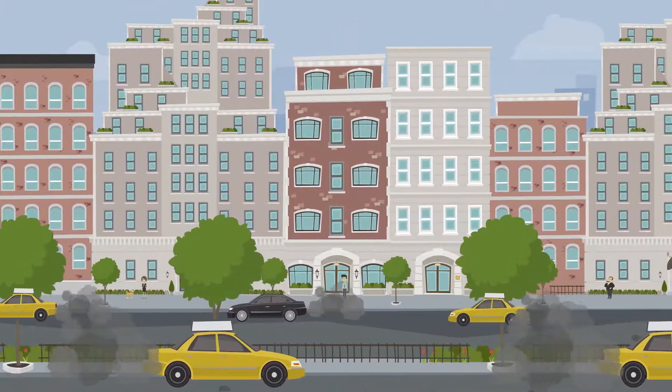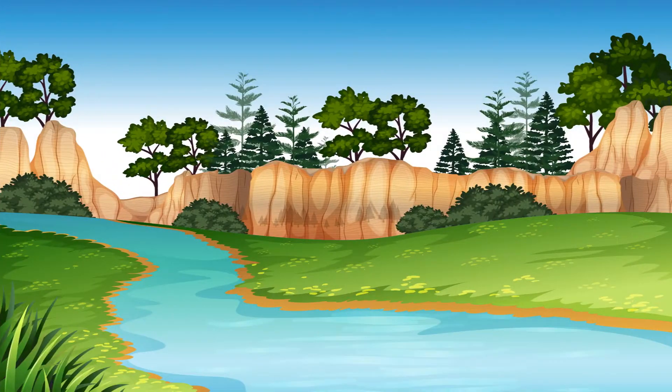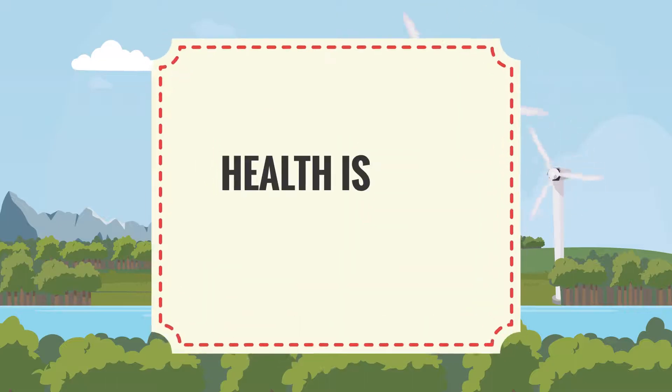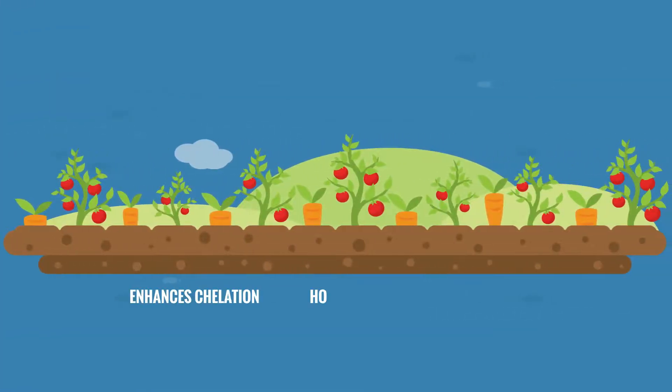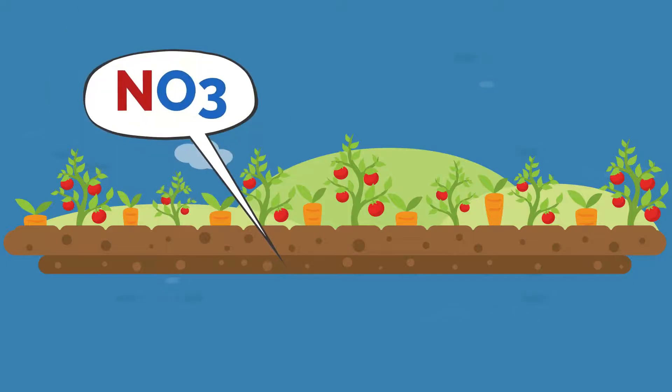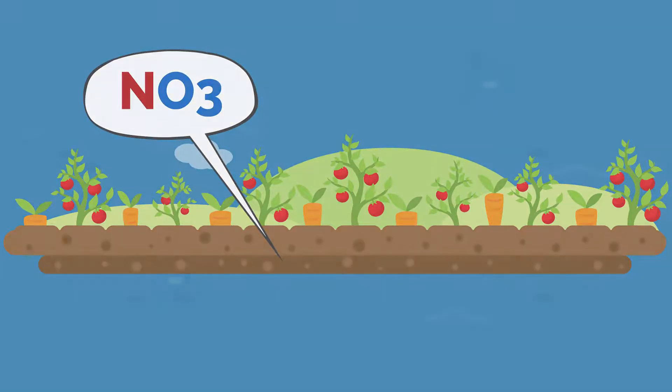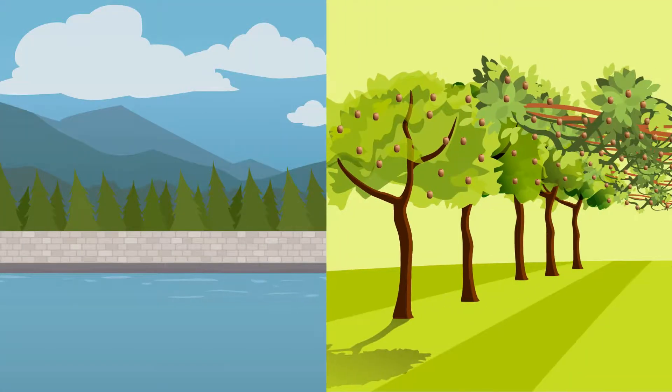As we move into the 21st century, the need to look after our waterways, atmosphere and health is even more important. Humates significantly enhances chelation or holding qualities of the soil, meaning nitrates that aren't taken up by the plant are held in the soil, instead of leaching into waterways and river systems.